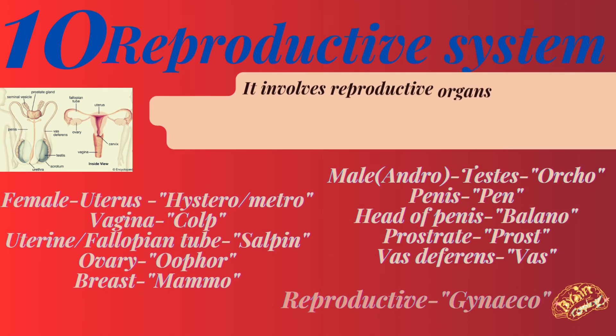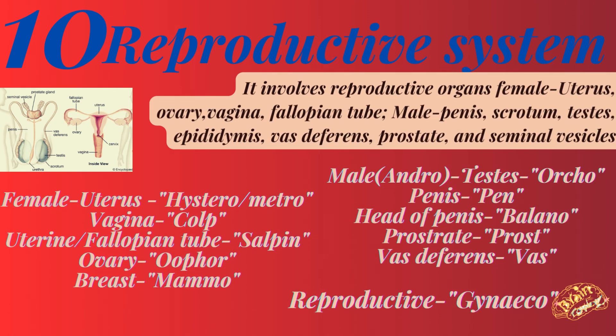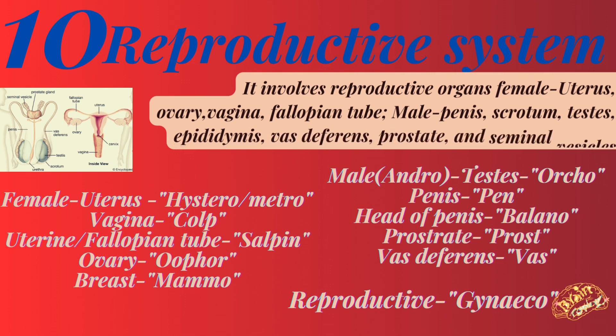Number ten: the reproductive system. It involves reproductive organs. In females: uterus, ovary, vagina, and fallopian tube. In males: penis, scrotum, testes, epididymis, vas deferens, prostate, and seminal vesicles. Medical terms: reproductive is 'gyneco', uterus is 'hystero' or 'metro', vagina is 'colpo', fallopian tube is 'salpin', ovary is 'oophoro', breast is 'mammo', testes is 'orcho', penis is 'peno', head of penis is 'balano', prostate is 'prostat', and vas deferens is 'vas'.